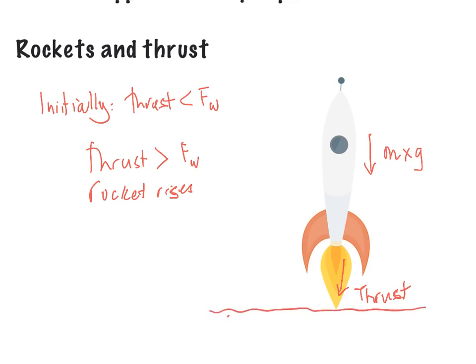Down here is the Earth, so when the rocket pushes down, the Earth pushes back — the same rules apply. If the rocket is stationary the thrust equals the weight, but once we get it moving, that's where Newton's second law, F = ma, comes into play. The rocket pushes down, the Earth effectively pushes back, and once the thrust is greater than the weight we get movement. The push downward forces the motion upward — thrust and motion work in opposite directions.